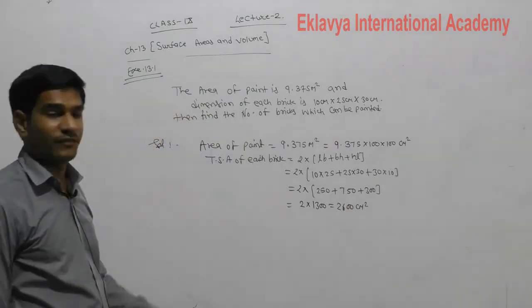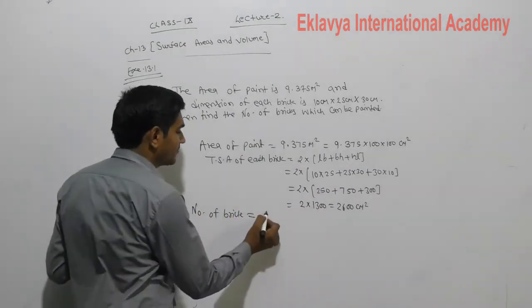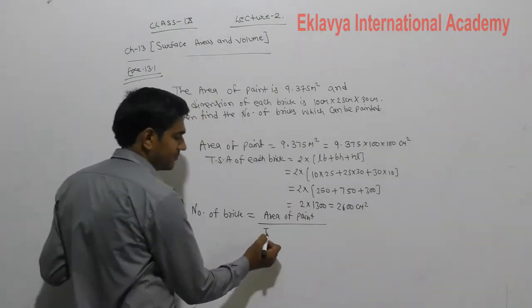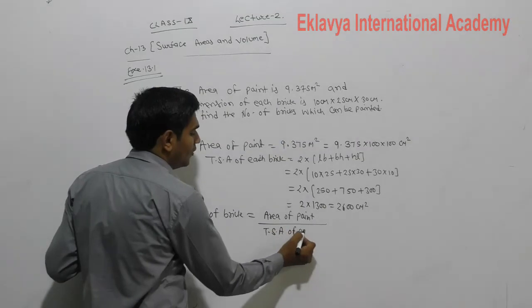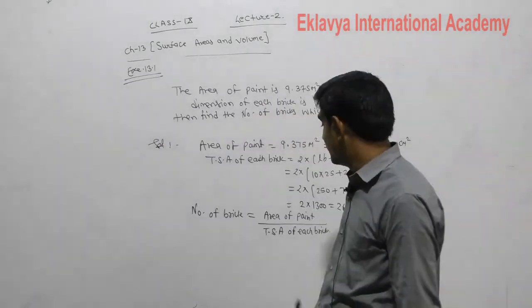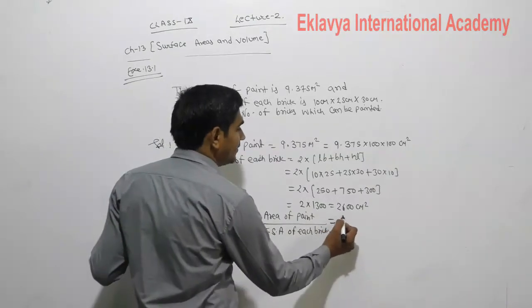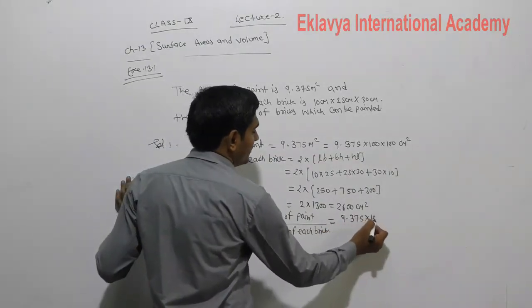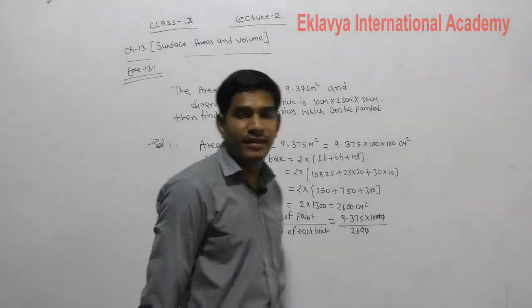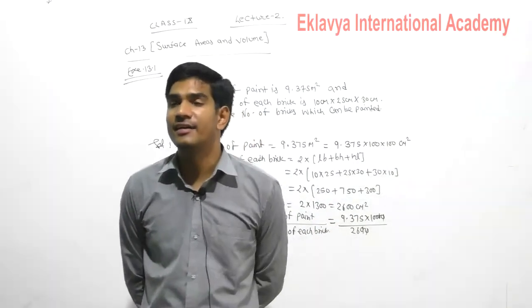That is the total surface area of each brick. Number of bricks = area of paint ÷ total surface area of each brick = 93,750 ÷ 2,600. Calculate this to get the number of bricks which can be painted with the paint given in the container.